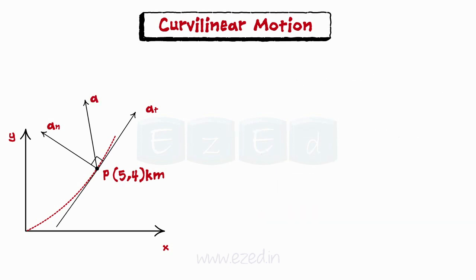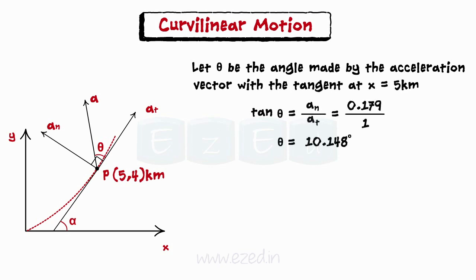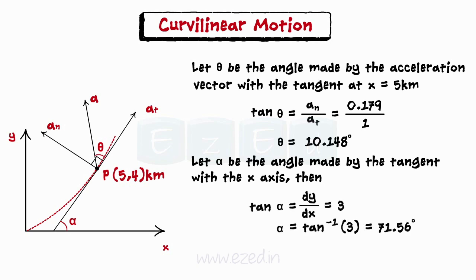Now we have to find the inclination of the resultant acceleration. Let theta be the angle made by the acceleration vector with the tangent at x equals 5. So the inclination angle theta can be found out. We also have to find the inclination with respect to the positive x-axis. So tan alpha is given by the slope of the line and its inclination is found out. The total inclination made with the positive x-axis is the summation of theta plus alpha.